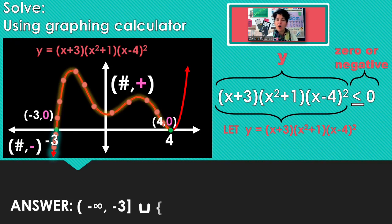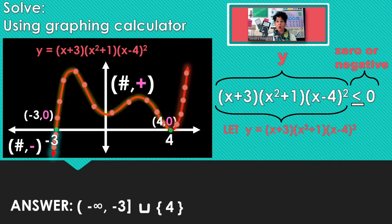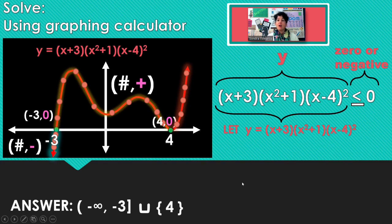But all of the numbers after 4 give positive y-coordinates, and we only want 0 or negatives. So those x-values do not work. We do union, then just the number 4.